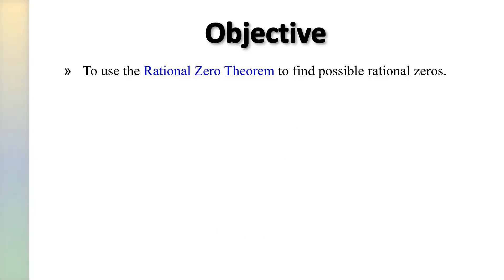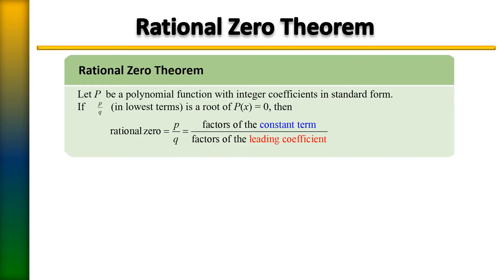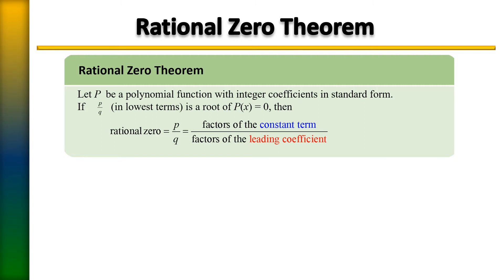In this section we will use the rational zero theorem to find possible rational zeros. Let P be a polynomial function with integer coefficients in standard form. If P over Q in lowest terms is a root of P of X equals zero, then the rational zero is P over Q — P meaning the factors of the constant term and Q meaning the factors of the leading coefficient.